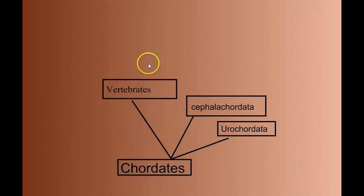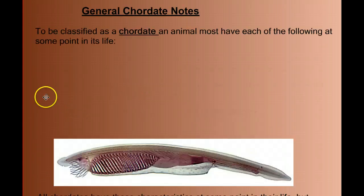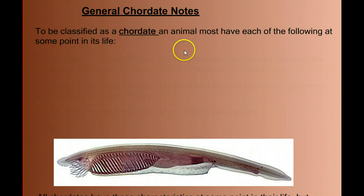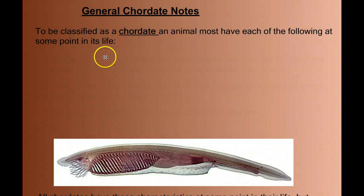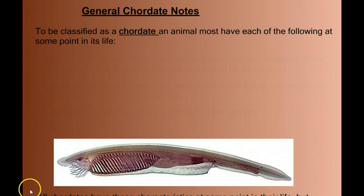Before we get into details of the vertebrates, we need to remind ourselves what we learned in our last video of the invertebrates, and that is, what is a chordate? To be in the phylum Chordata, an animal at some point in its life must have the following four characteristics.